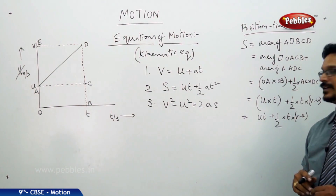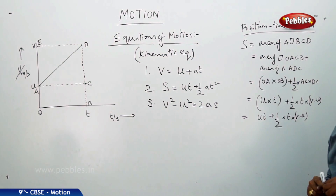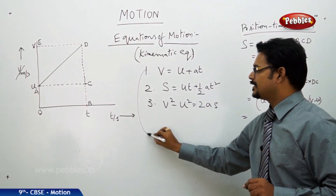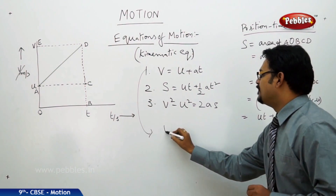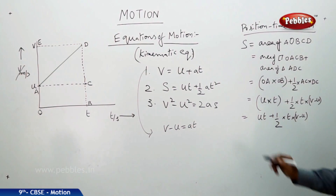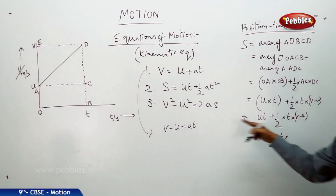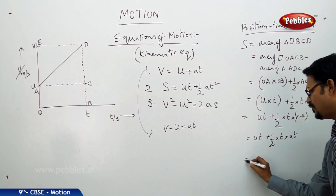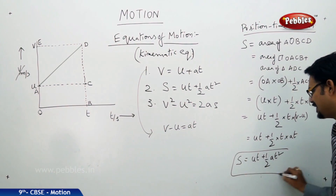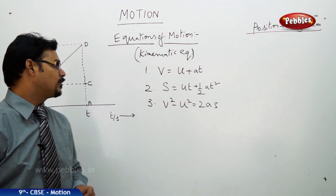This gives s = ut + ½·t·(v - u). But this is not our final formula. From the first equation, v = u + at, we can rearrange to get v - u = at. Substituting at in place of (v - u): s = ut + ½·t·(at) = ut + ½at². This is the distance formula, also called the position-time relationship.